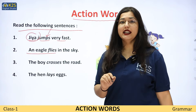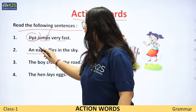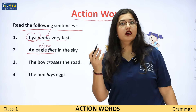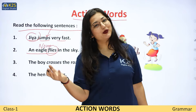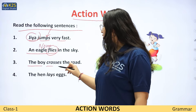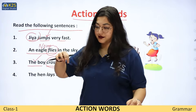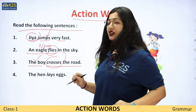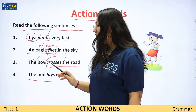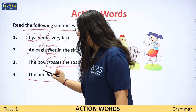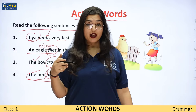'An eagle flies.' Eagle fly kar raha hai. Eagle ho gya mera noun. Aur yahan par noun kaunsa action kar raha hai? Fly karne ka. Toh fly mera action word ho gya. 'The boy crosses the road.' Boy kya hai? Mera noun. Aur kaunsa action? Cross karna. 'The hen lays egg.' Jo hen hai woh eggs de rahi hai. Toh hen ho gya mera noun, aur lays mera action word ho gya.